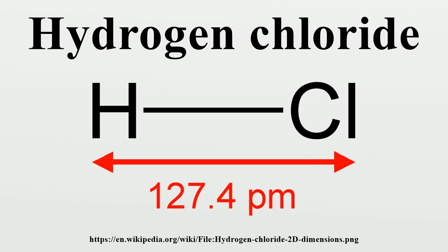For example, cold water can be gradually dripped onto phosphorus pentachloride to give hydrogen chloride. The use of a generator requires only apparatus and materials commonly available in a laboratory. Most hydrogen chloride is used in the production of hydrochloric acid.